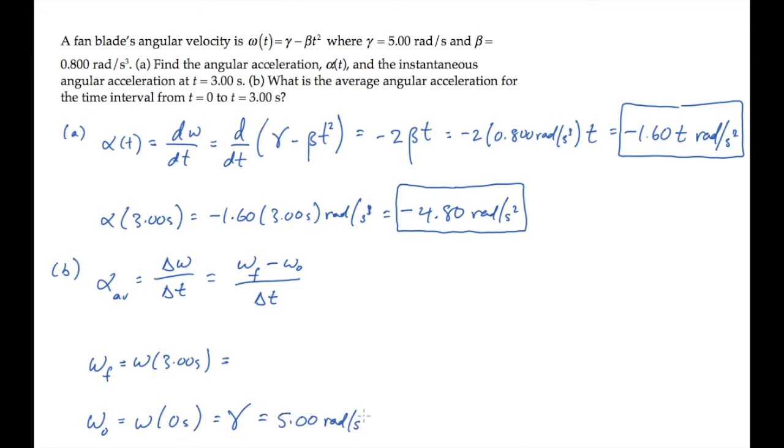The value at t equals 3 seconds. Gamma minus beta t squared is 5 radians per second minus 0.8 radians per second cubed times the time squared. That works out to minus 2.20 radians per second. That negative tells you that it's spinning in the opposite direction from the initial direction.